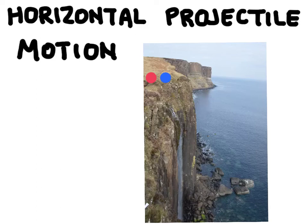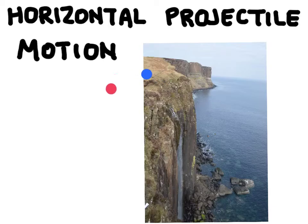In this video we're going to talk about projectile motion, and specifically horizontal projectile motion. When I say horizontal projectile motion, I'm talking about something like a ball rolling off a table or a cliff — an object that was initially traveling just horizontally, like this blue ball moving across the top of this cliff, and then it rolls over the edge and begins to fall down to the very bottom.